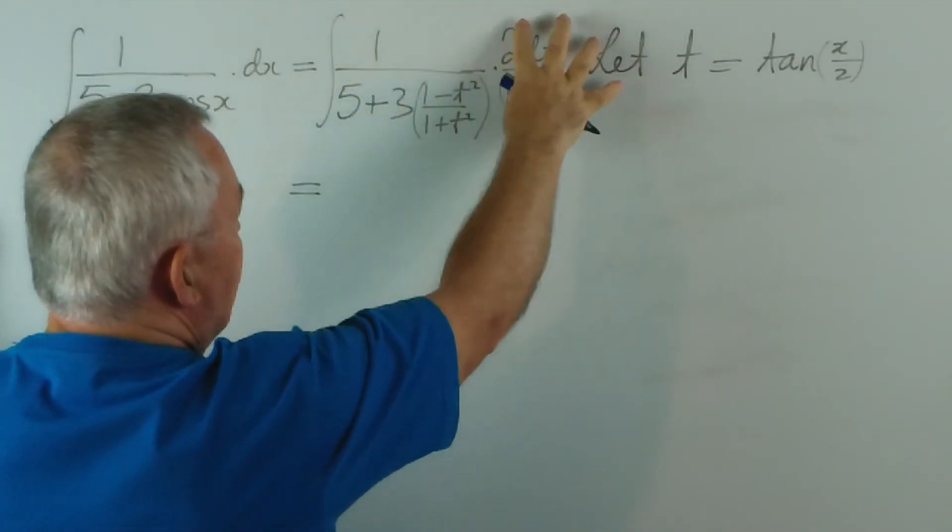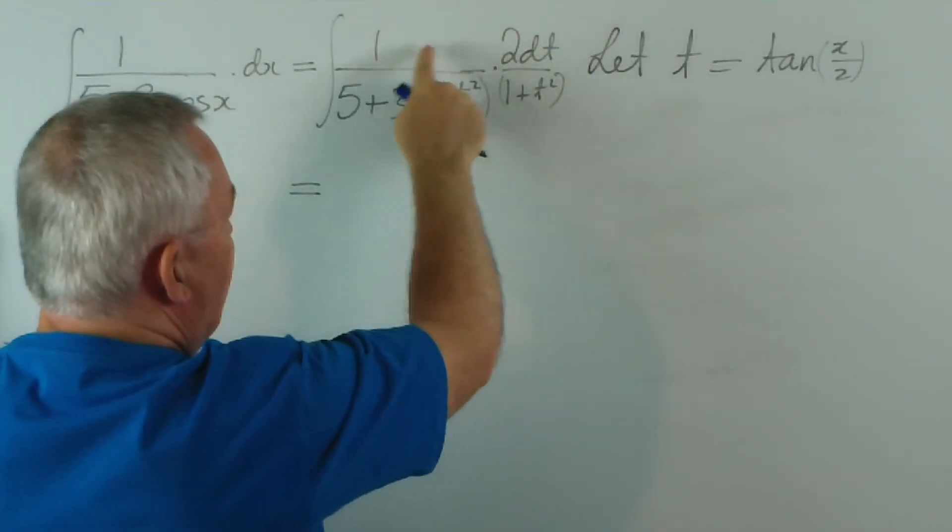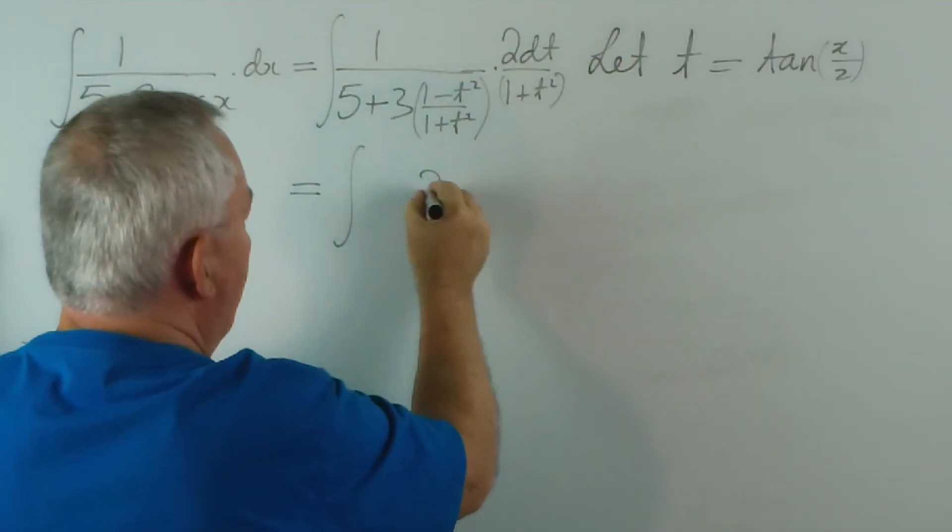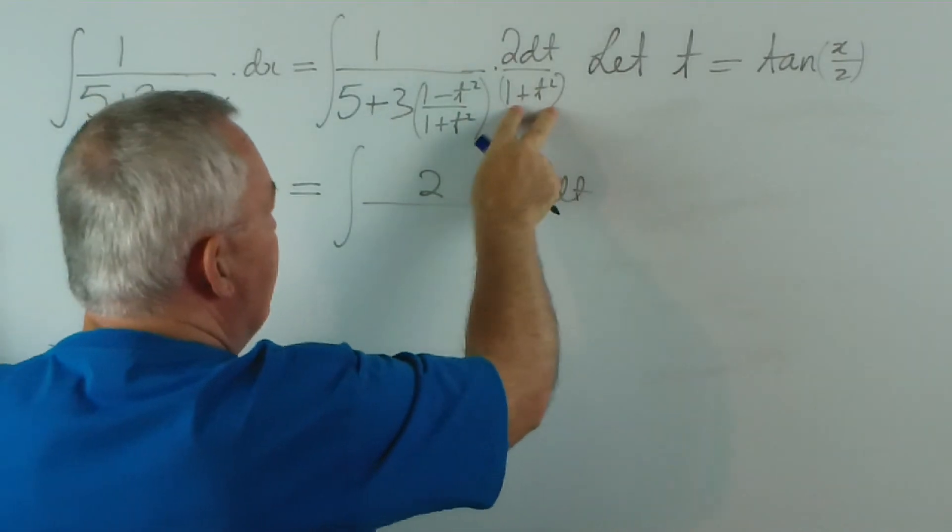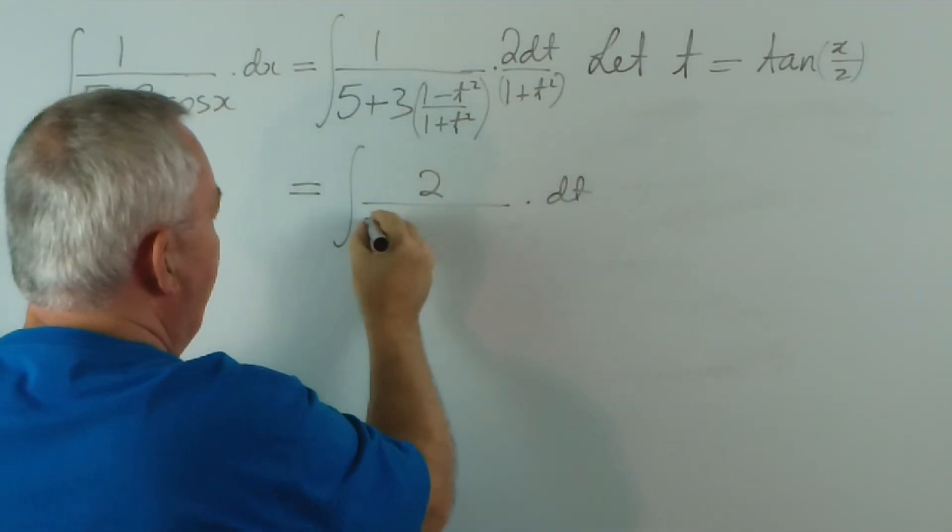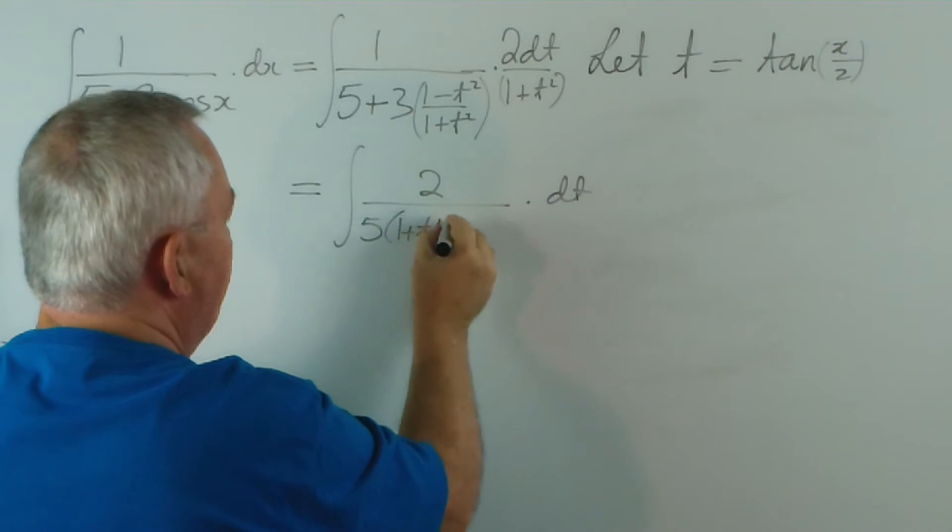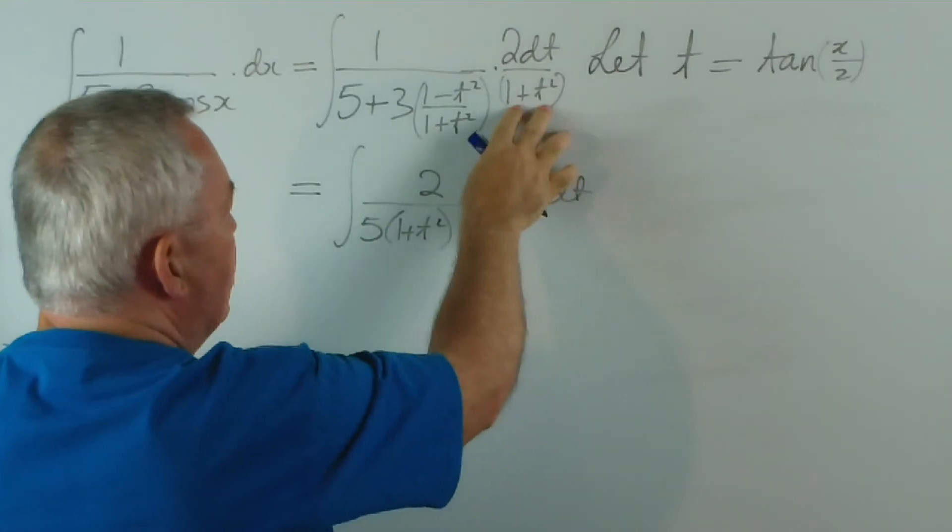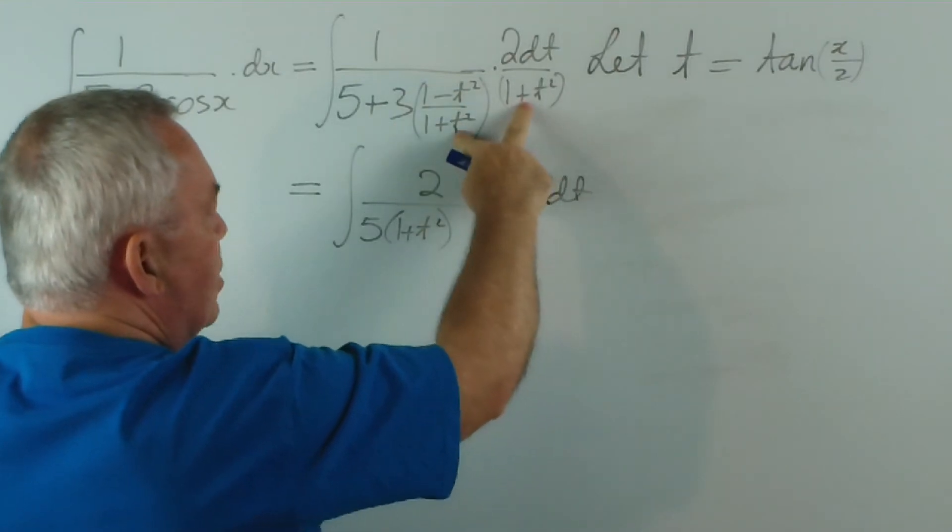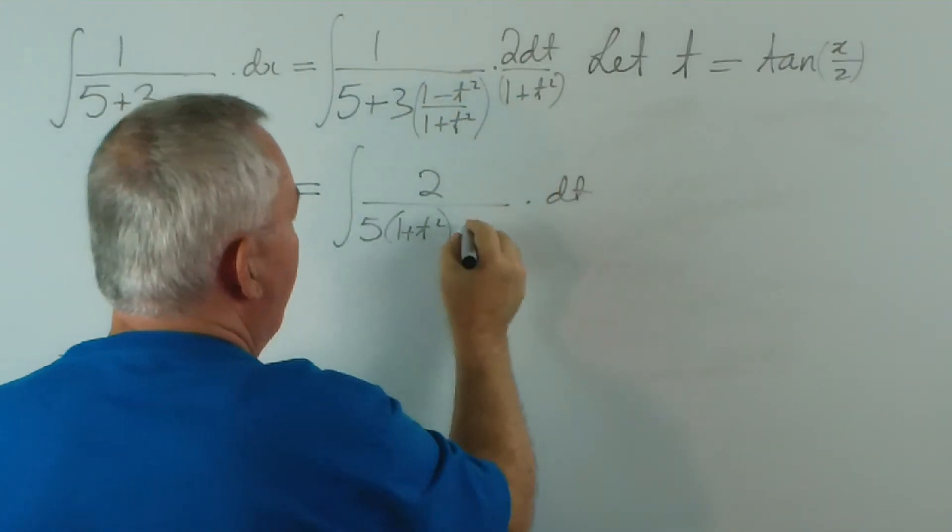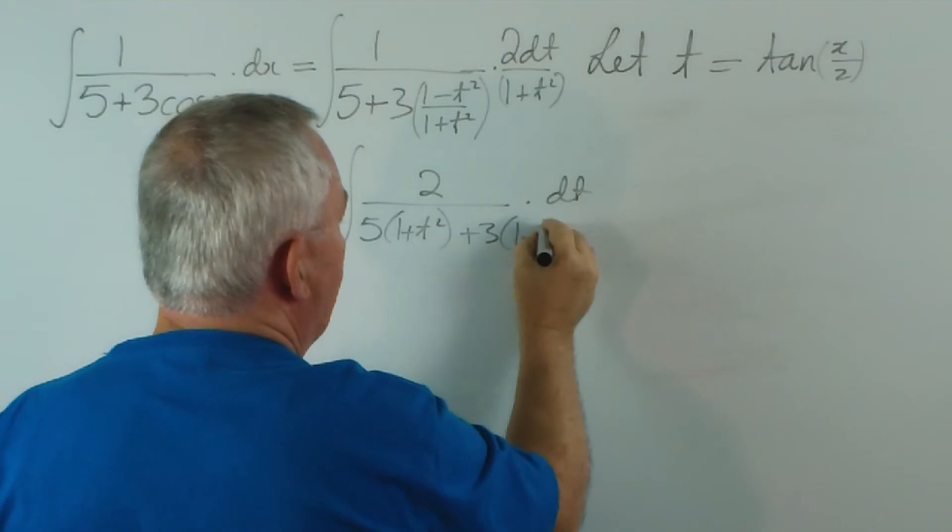Now we have a fraction times a fraction. We can do 1 times 2dt will be 2dt, and we have (1 + t squared) times this. Now I'm just going to write 5 lots of (1 + t squared), but (1 + t squared) times this expression here, the (1 + t squared) divide out, and I'm left with 3 lots of (1 - t squared).